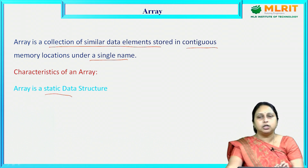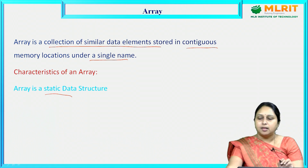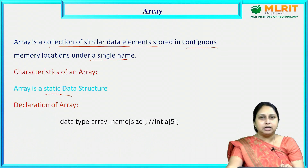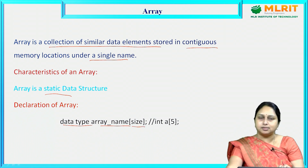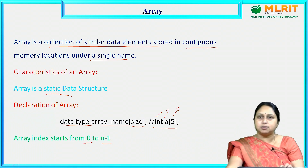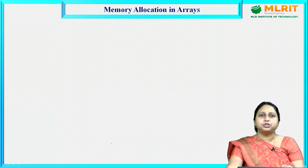Being static means the size specified for an array is fixed — it may not be expanded or compressed. An array can be declared by specifying the data type, followed by the array name, and the size. For example, int a[5] — here int is the data type, a is the array name, and 5 is the size. The array index starts from 0 to n minus 1.